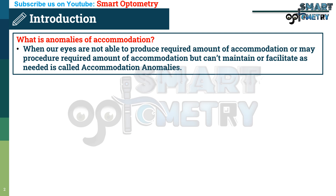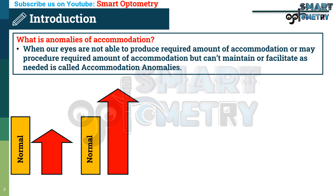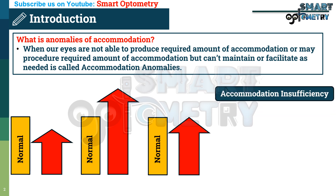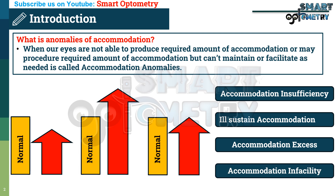Anomalies of accommodation can be due to: lower accommodation than required — that is accommodative insufficiency; higher accommodation than required — that is accommodation excess; normal accommodation but not able to maintain for long — that is ill-sustained accommodation; and accommodation that cannot facilitate at required distances — that is accommodative infacility. The most common accommodative anomalies are accommodation insufficiency, ill-sustained accommodation, accommodation excess, and accommodation infacility.